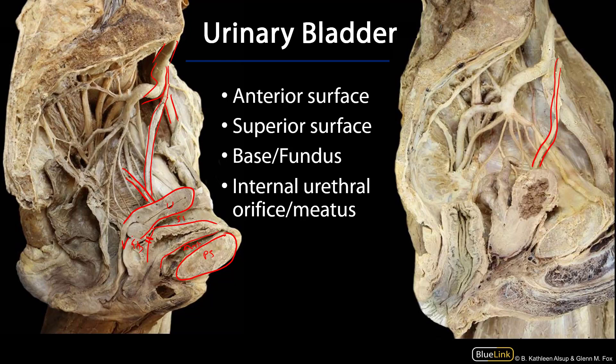The urinary bladder is going to void through the urethra, and the urethra is going to begin just distal to the neck of the bladder. The neck would be here where we have the internal urethral orifice or meatus.